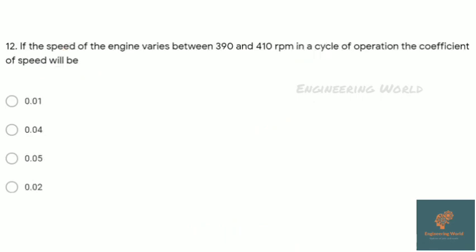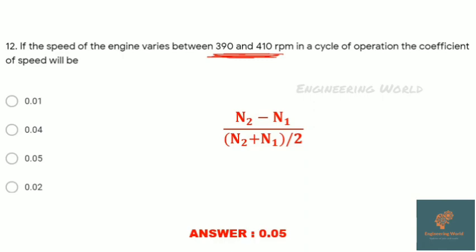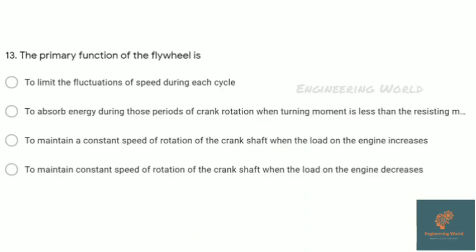If the speed of engine varies between 390 and 410 rpm in a cycle of operation, the coefficient of speed will be? This is a formula-based question. Coefficient of speed is given by (n2-n1)/(mean speed), where mean speed = (n2+n1)/2. Given n1=390 and n2=410 rpm, by putting values we get coefficient of speed as 0.05.